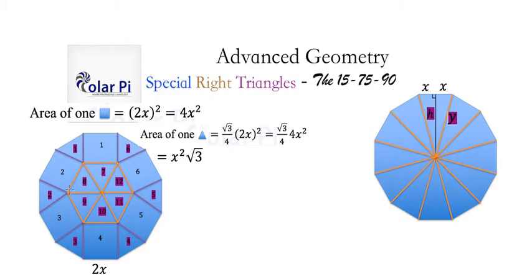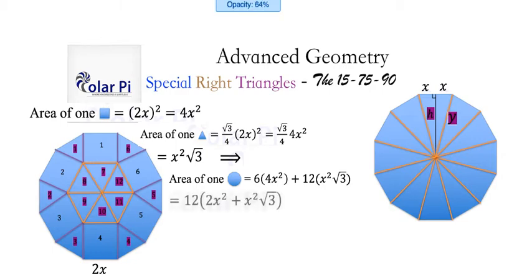And since this dodecagon here on the left is made of 6 squares and 12 equilateral triangles, the area of the dodecagon can be found by adding 6 times 4X squared, so 6 of the squares, and 12 times X squared times root 3, so 12 of the equilateral triangles. And we can take that expression and simplify it to this.